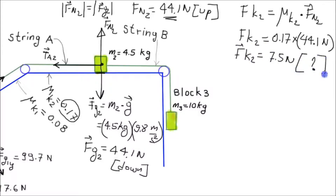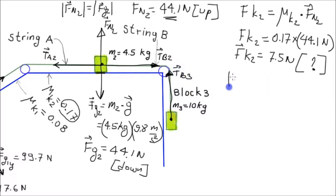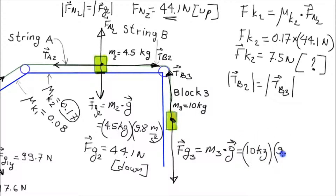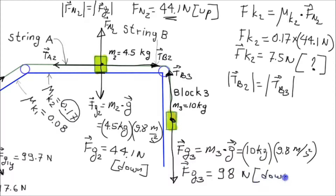The force of friction acting on block two is mu_k2 times fn2: 0.17 times 44.1 newtons, giving 7.5 newtons. Tb2 is the force exerted by string B on block two, and Tb3 is the force exerted by string B on block three. These two forces are equal in magnitude but opposite in direction along the string. The force of gravity acting on block three is m3 times g: 10 kilograms times 9.8 meters per second squared, giving 98 newtons downward.